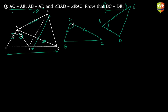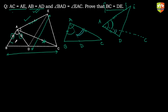We just need to check whether the included angles are equal. It's given that angle BAD equals angle EAC. Notice that angle DAC is common to both. So if I add angle DAC to angle BAD, I get angle BAC. And if I add angle DAC to angle CAE, I get angle DAE. Therefore angle BAC equals angle DAE.